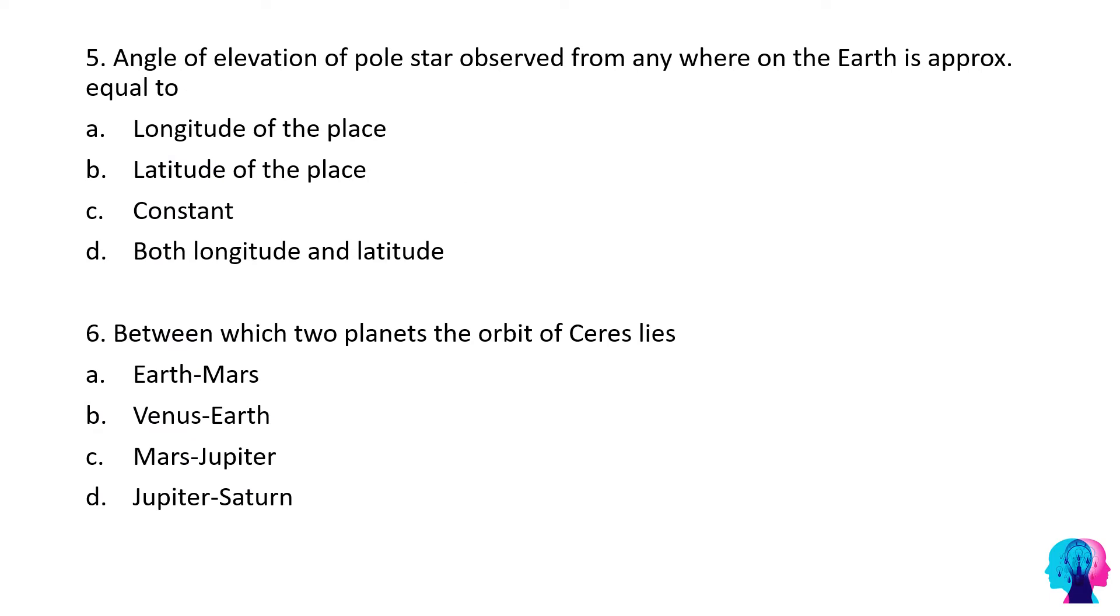Next question: angle of elevation of pole star observed from anywhere on the earth is approximately equal to? The answer is latitude of that place. Why latitude? Position of the pole star is close to pole and coincides with the axis of rotation of the earth. Therefore, the angle of elevation of pole star at any place is nearly equal to latitude of that place.